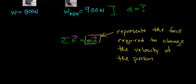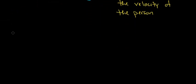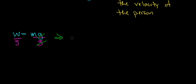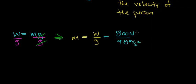We're going to need to know the mass of this person so we can figure out how much force is required to accelerate their body upward. We'll use the relationship that weight equals the mass of an object times the gravitational acceleration on Earth. We're given the weight as 800 newtons, and the gravitational acceleration is 9.8 meters per second squared. Dividing both sides by g, the gravitational acceleration cancels out, giving us mass equals weight divided by gravitational acceleration. Dividing 800 newtons by 9.8 meters per second squared gives 81.6 kilograms — a newton divided by a meter per second squared is a kilogram.